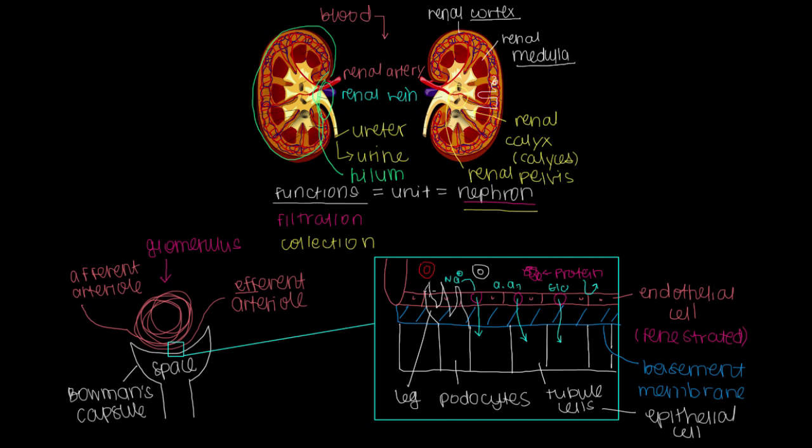Alright, so I think we have a pretty good appreciation of how smaller ions, amino acids, glucose, and water can leak through these fenestrations and get into this space right here. Remember, this is Bowman's space, where we can then process them into the rest of the nephron.